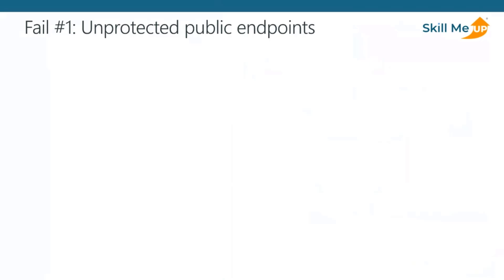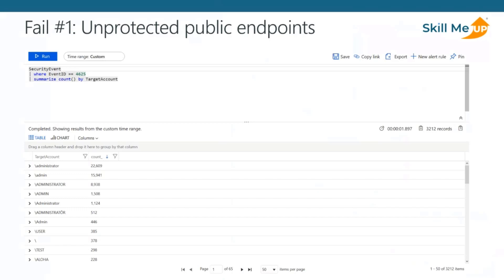How impactful is that? How bad is it really? Here is an example of two virtual machines running 24 hours — just one full day — unprotected on the internet. They are fully patched. I've just created them in the public Azure cloud: two Windows virtual machines. I'm running a query against their security logs.